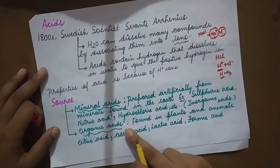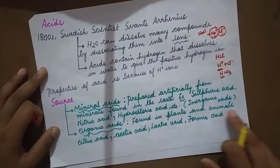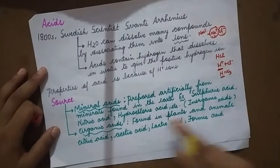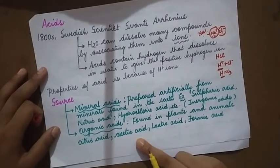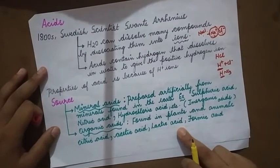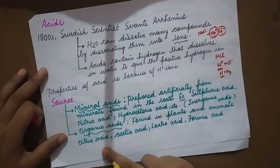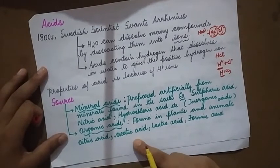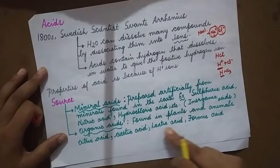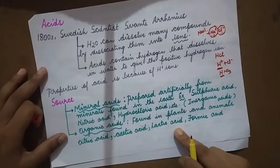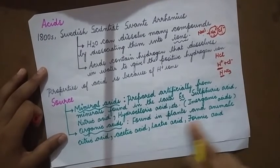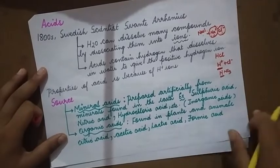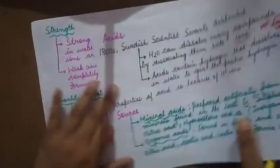Next, organic acids — these are found in plants and animals. Examples include citric acid, acetic acid, lactic acid, and formic acid. Citric acid is found in lemon, and acetic acid is found in vinegar. These are all organic acids.